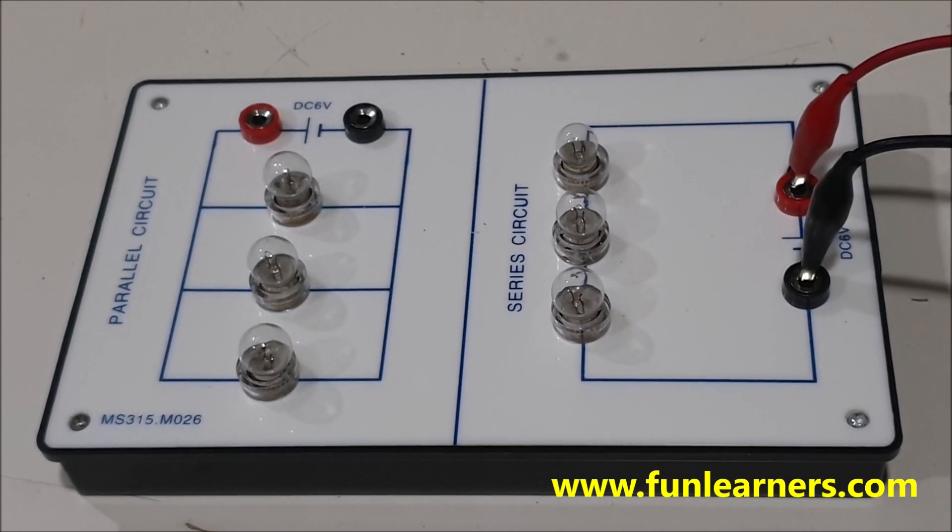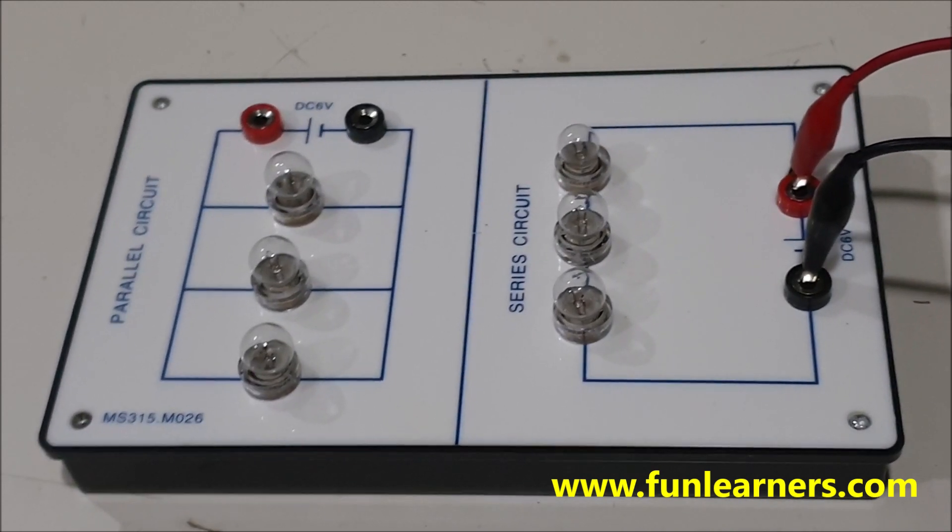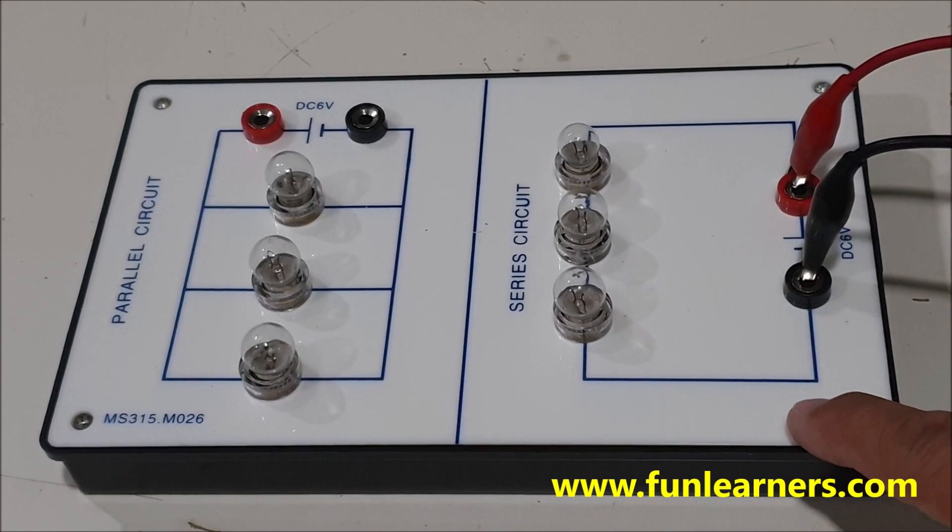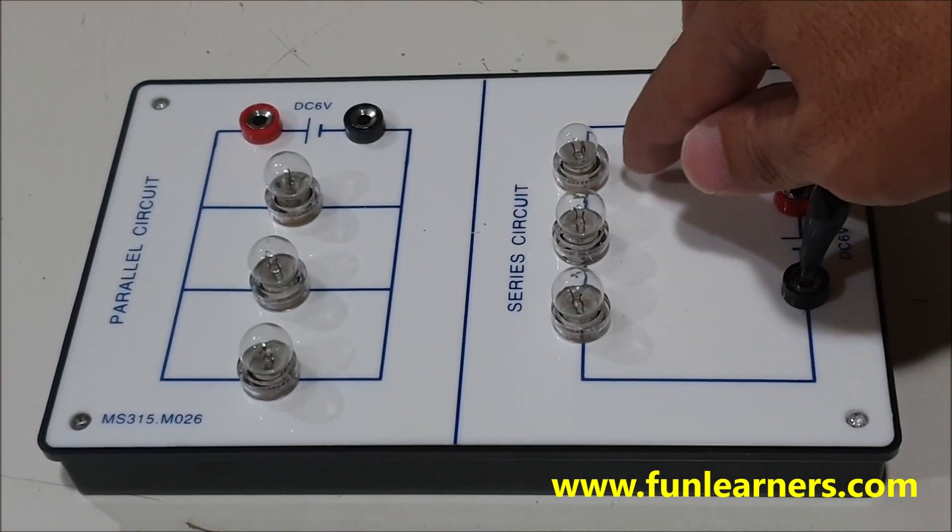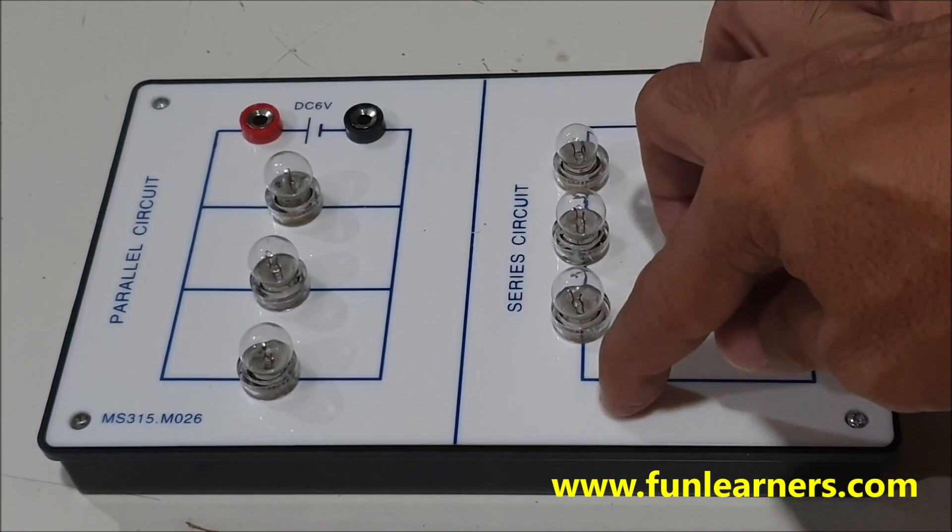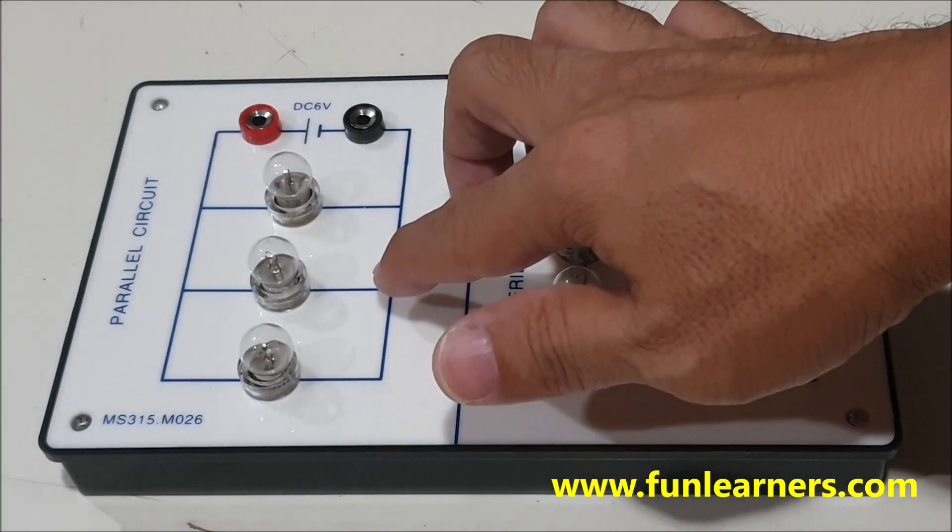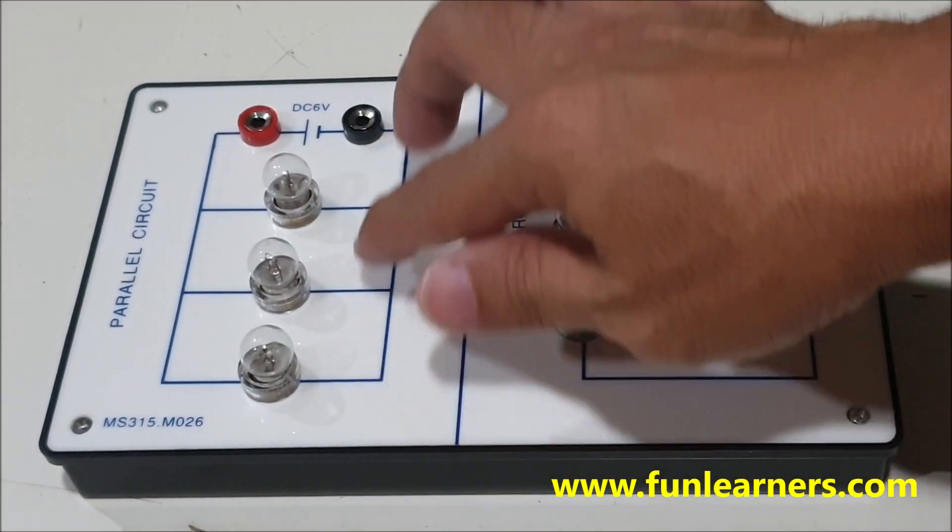We are here to explain the difference between a series circuit and a parallel circuit. This is a series circuit. The three light bulbs are connected one after another on the same wire. In the parallel circuit, the light bulbs are connected